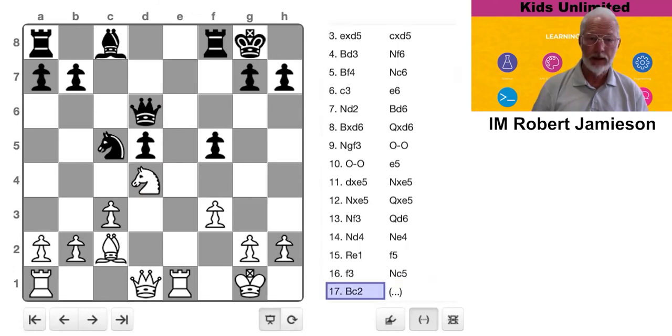Alright, g6. Well, another positional blunder. He presumably wants to defend this pawn, but it's only attacked twice and defended twice. It's not under threat at the moment. And clearly what he does not understand is airy king. By moving the pawn, he's opened up his king. Which could give him problems later in the game.